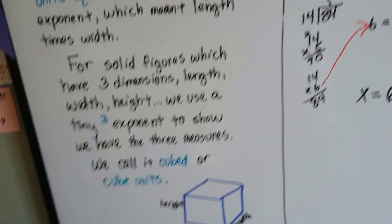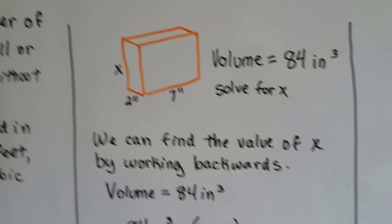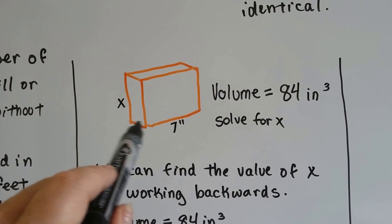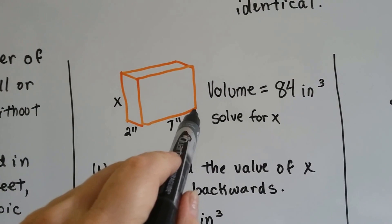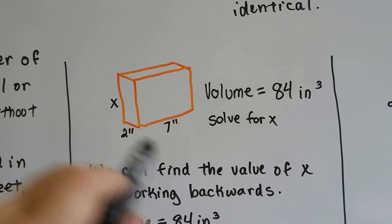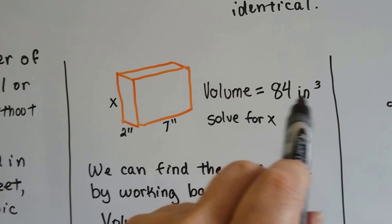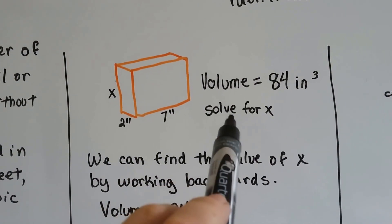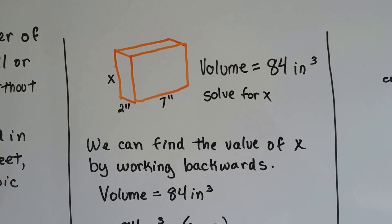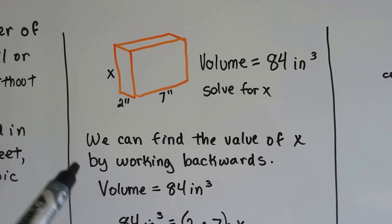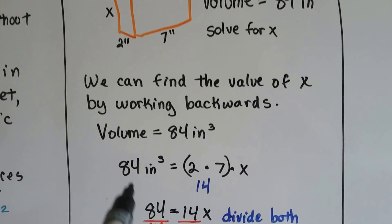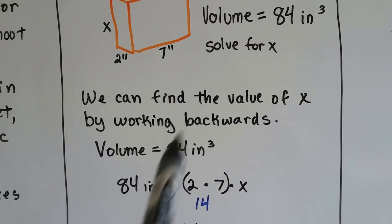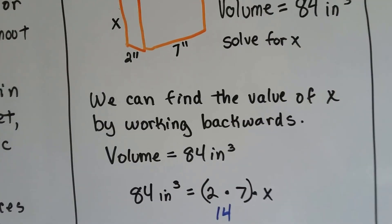If we know that across here is two inches and it's seven inches long, but we don't know how tall it is, but we know the volume is 84 inches cubed, we need to solve for x. We can find the value of x by working backwards. If we know the volume is 84 inches cubed, that's where we start. We put that in place of the v in the formula.